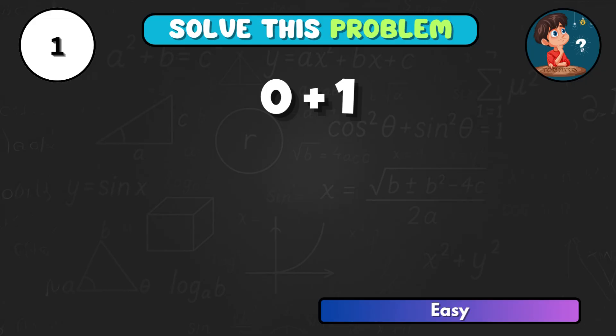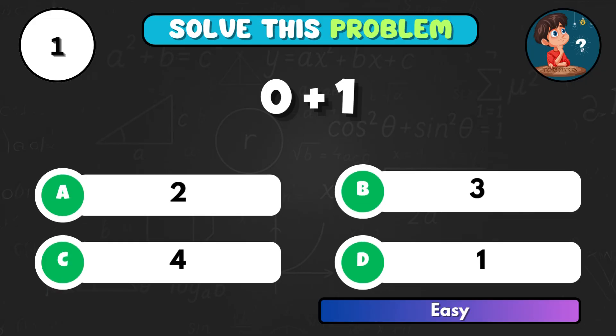Let's start easy! What do you get when you add 0 and 1? The correct choice is D and the answer is 1.